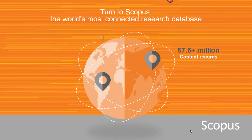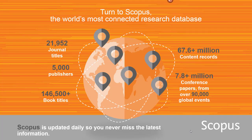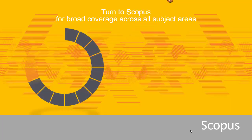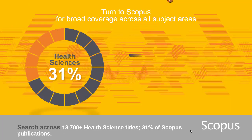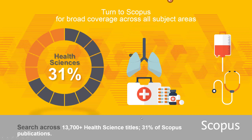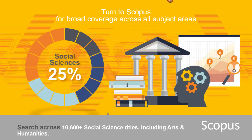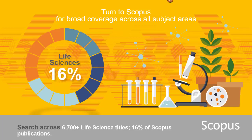If you want to make sure you're doing a comprehensive review of the literature, Scopus would be a great database to add to your search. It includes almost 22,000 peer-reviewed journals, plus some other content in all subject areas with strong coverage in the health sciences, physical sciences, social sciences including arts and humanities, and life sciences.